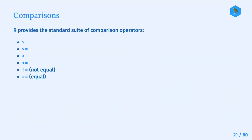You can make comparisons when using this function. R provides the standard set of comparison operators: greater than, greater than or equal to, less than, less than or equal to, not equal to (exclamation point followed by an equal sign), and equal, which is two equal signs.